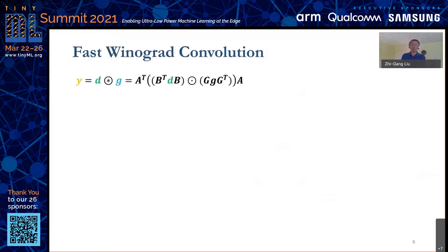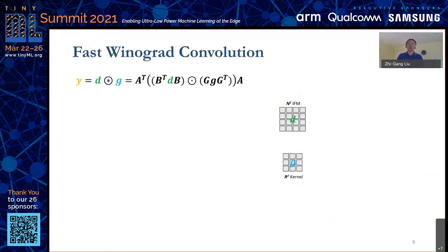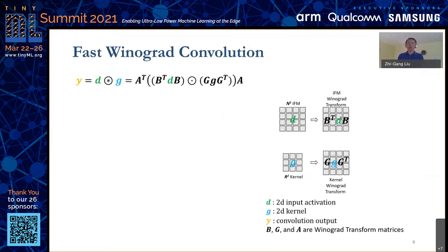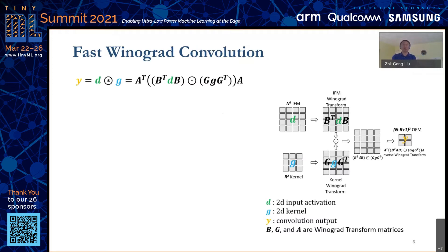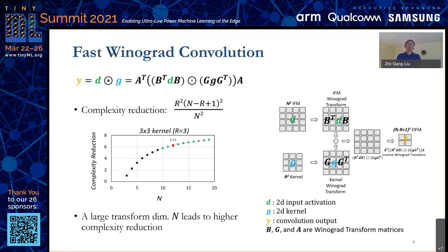We know the faster Winograd algorithm can speed up convolutions. Given an n-by-n input activation D and r-by-r kernels G, to calculate the convolution Y, we first do the Winograd transform by multiplying some constant matrices from the left and right sides of D and G. Then we do element-wise multiplication between the two transformations, and finally do the reverse Winograd transform to get the final convolution Y precisely. This procedure is a complexity reduction scheme — for example, a 12-by-12 transformation can achieve up to a factor of 6.25 complexity reduction.